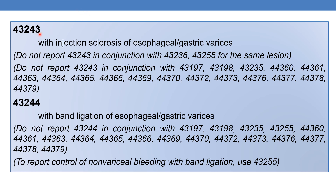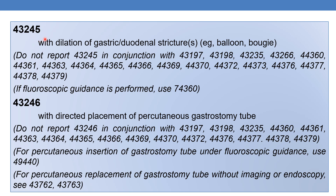The next CPT is 43243: esophagogastroduodenoscopy, flexible, transoral, with dilation of gastric or duodenal strictures. If fluoroscopic guidance is performed, use 74360. The next CPT is 43246: esophagogastroduodenoscopy, flexible, transoral, with directed placement of percutaneous gastrostomy tube. For percutaneous insertion of gastrostomy tube under fluoroscopic guidance, use 49440.